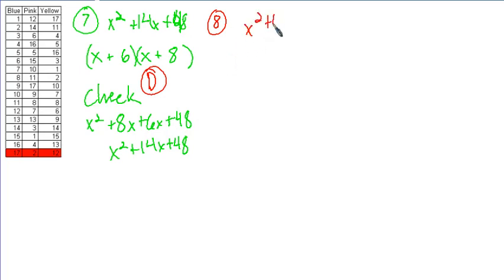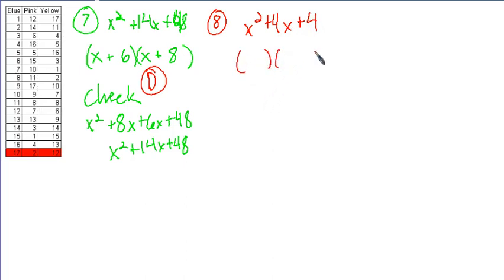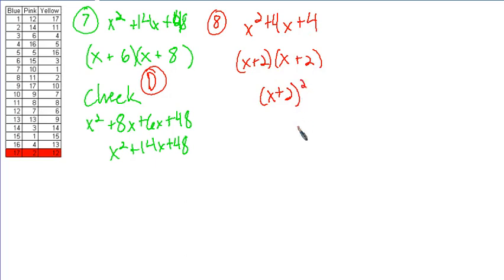Number 8: x squared plus 4x plus 4. Using the same reasoning — x and x, multiply to 4, add to 4 — that must be 2 and 2. So the answer is (x + 2)(x + 2), which you could also write as (x + 2) squared.